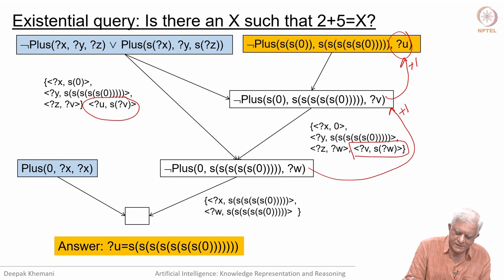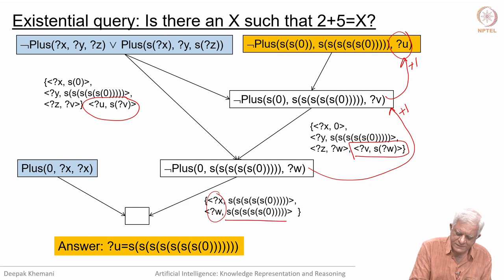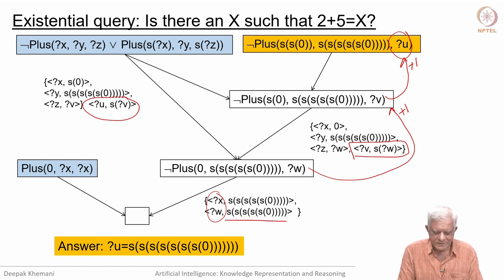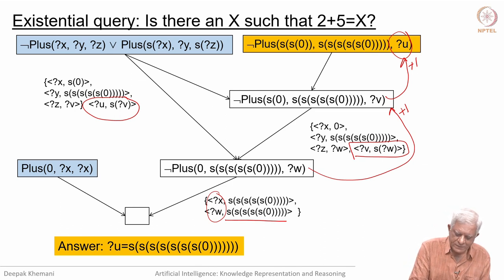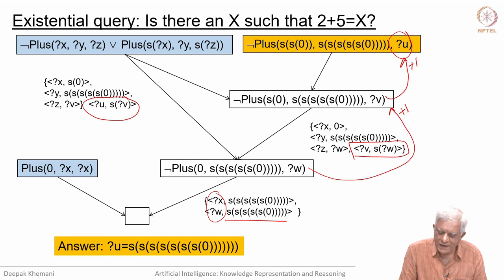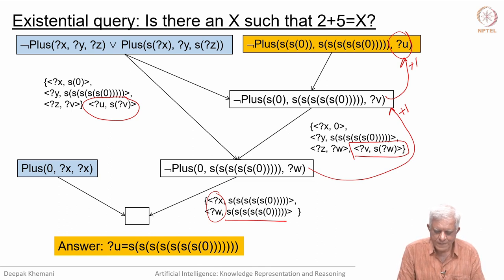That query succeeds — it succeeds with the fact that both x and w unify with the number 5. So w equals 5, and as a consequence u equals 5 plus 1 plus 1, as we said — adding 1 and 1 gives us the answer. So it can answer existential queries.